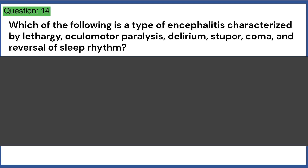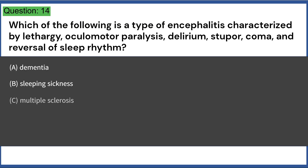Which of the following is a type of encephalitis characterized by lethargy, oculomotor paralysis, delirium, stupor, coma, and reversal of sleep rhythm? A. Dementia, B. Sleeping sickness, C. Multiple sclerosis, D. Hemiplegia, E. Bell's palsy. Answer: B.